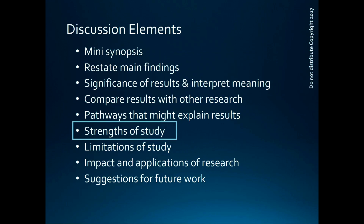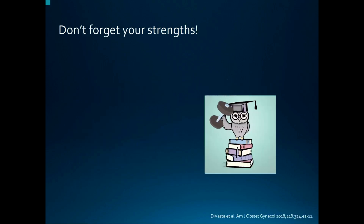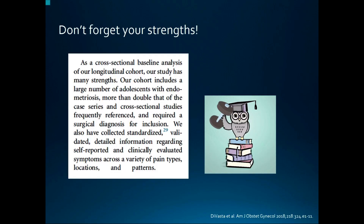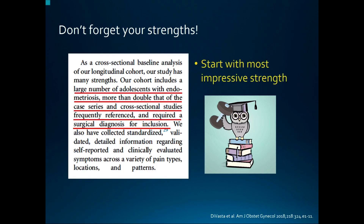A lot of times I read manuscript drafts and get to the discussion to find a big section on limitations but nothing on strengths. Don't forget to include strengths — you definitely have them. If you can't come up with any, ask your mentor or co-authors for ideas. In a good example, authors use a separate paragraph to present their strengths, which makes them stand out to the reader. It also looks like they started with their most impressive strength, which is a good strategy.